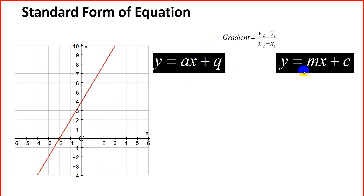m stands for gradient, and remember we have a gradient formula: y2 minus y1 over x2 minus x1. c is your y-intercept, or your constant.